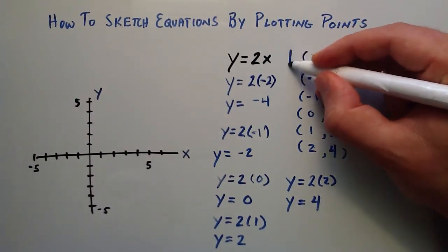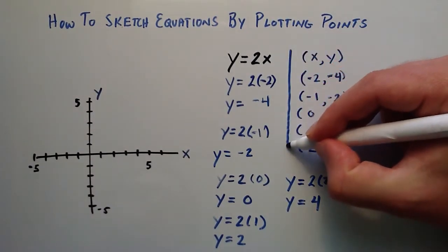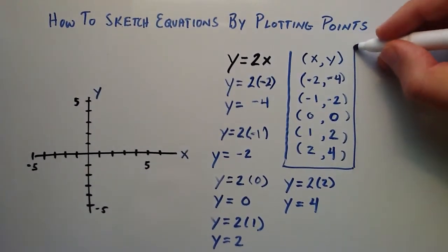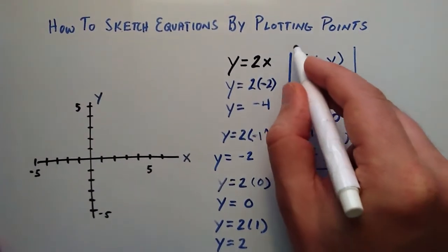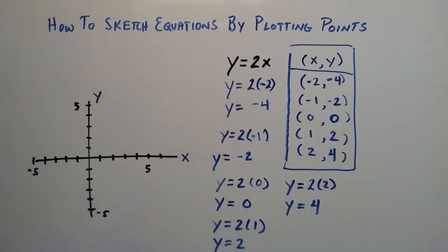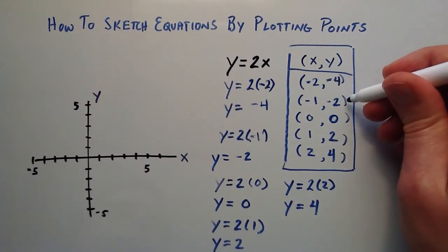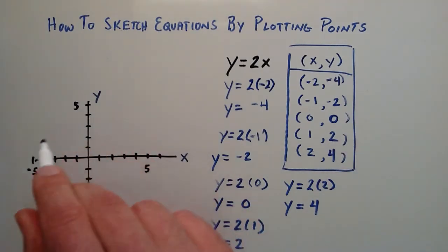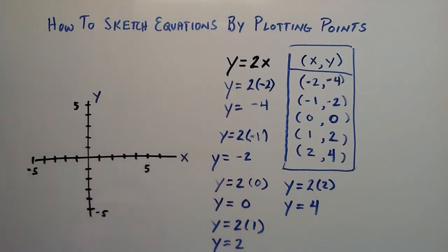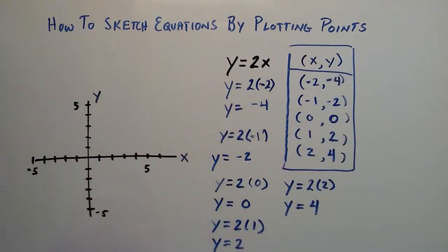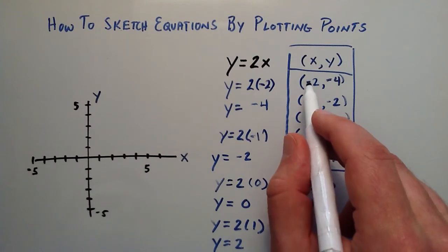Now we have 5 points that all satisfy this equation. What we're going to do is use these 5 points, plot them on the x-y coordinate system, connect the dots, and see what this sketch looks like.